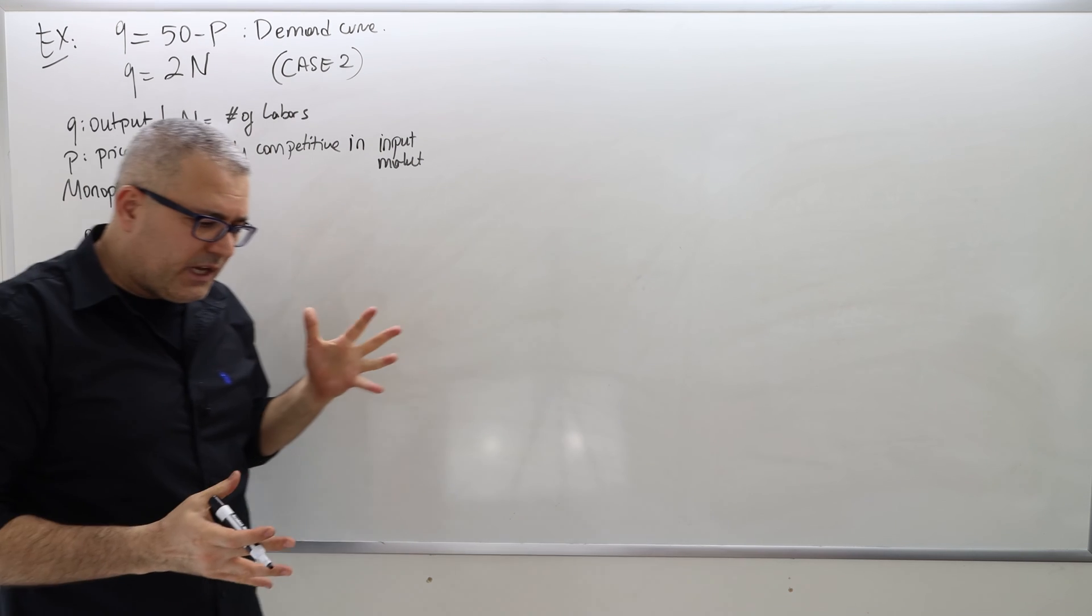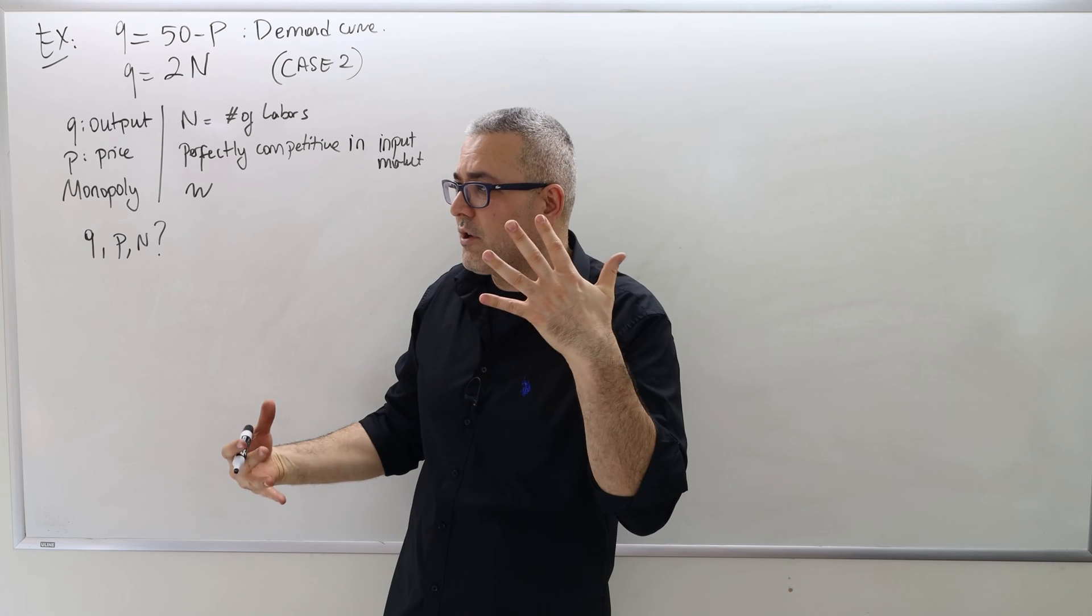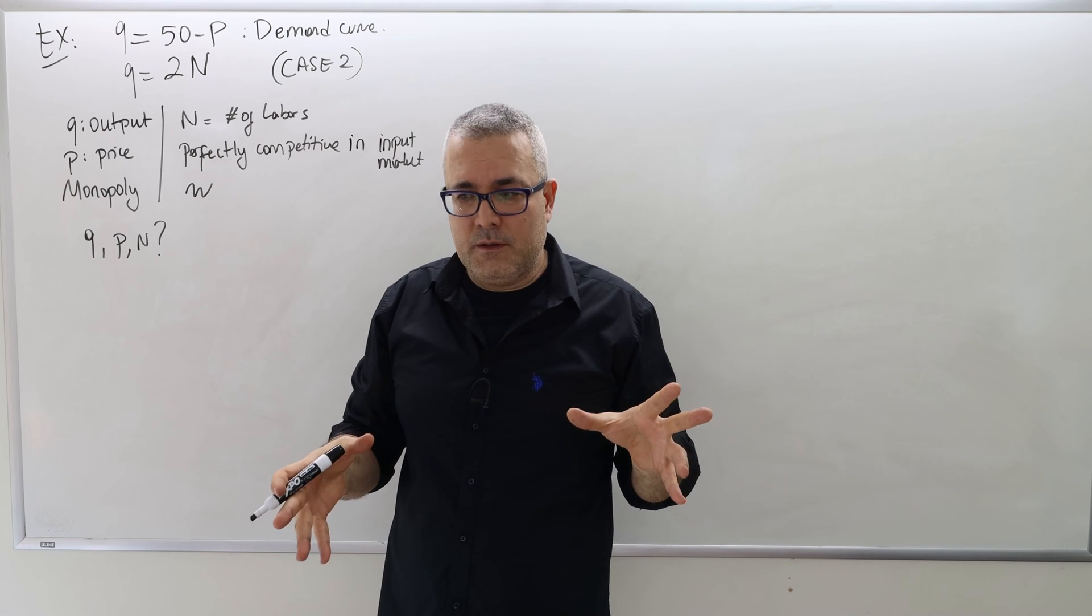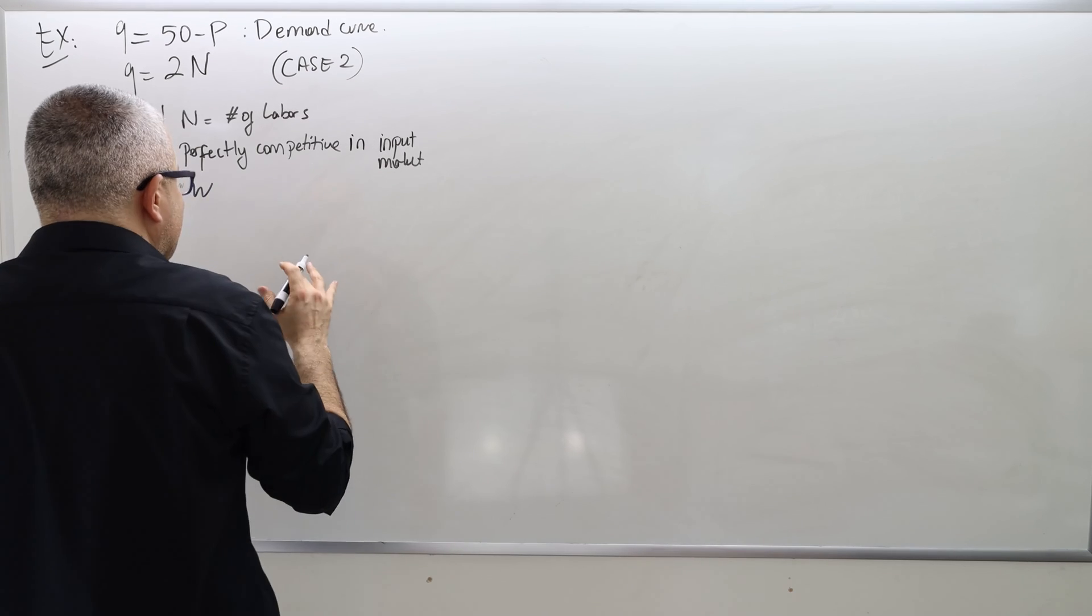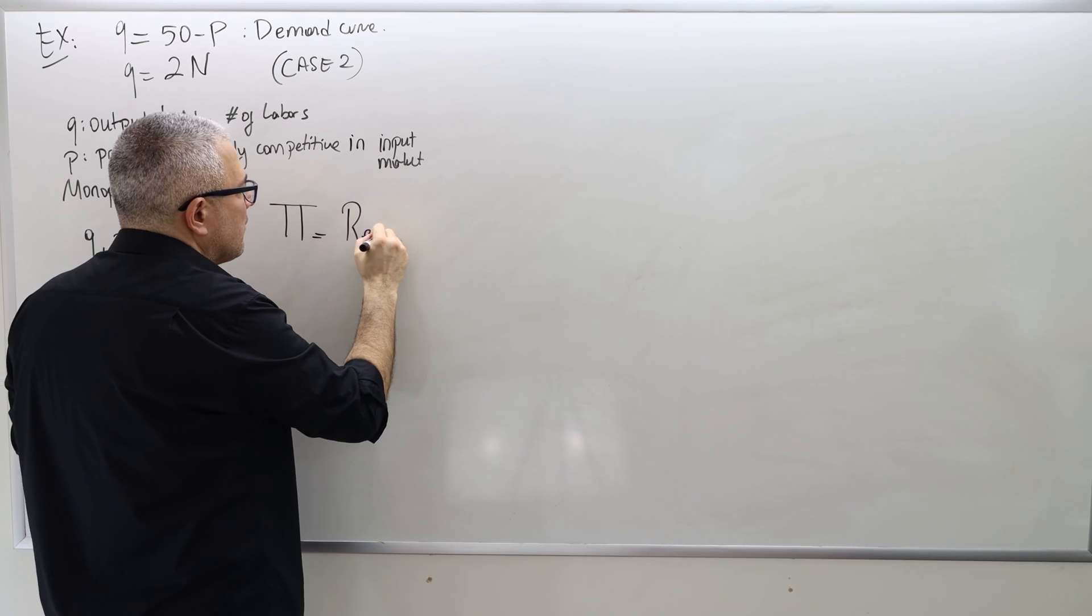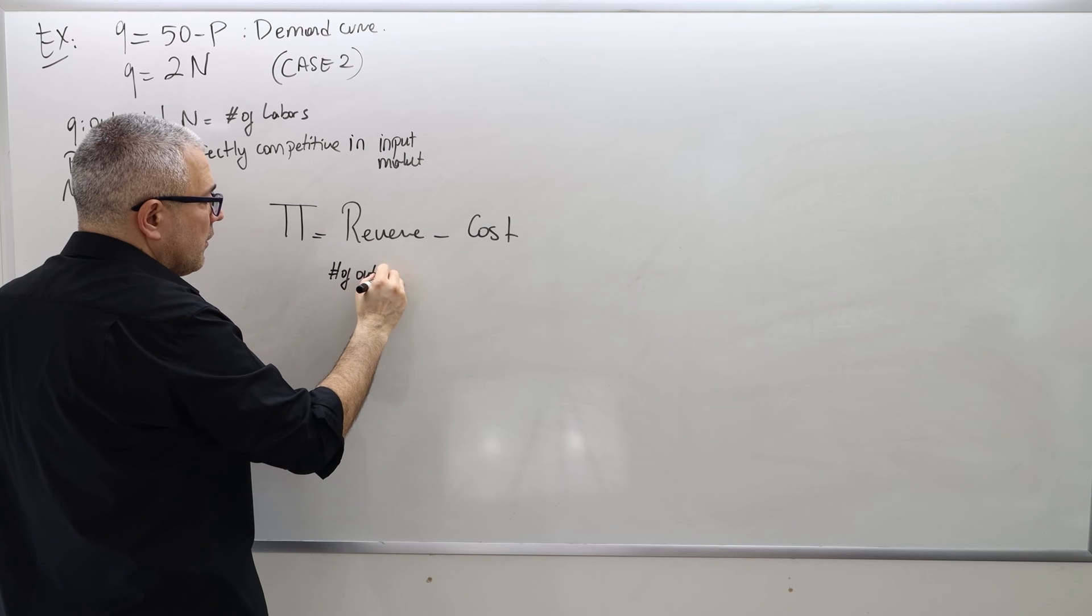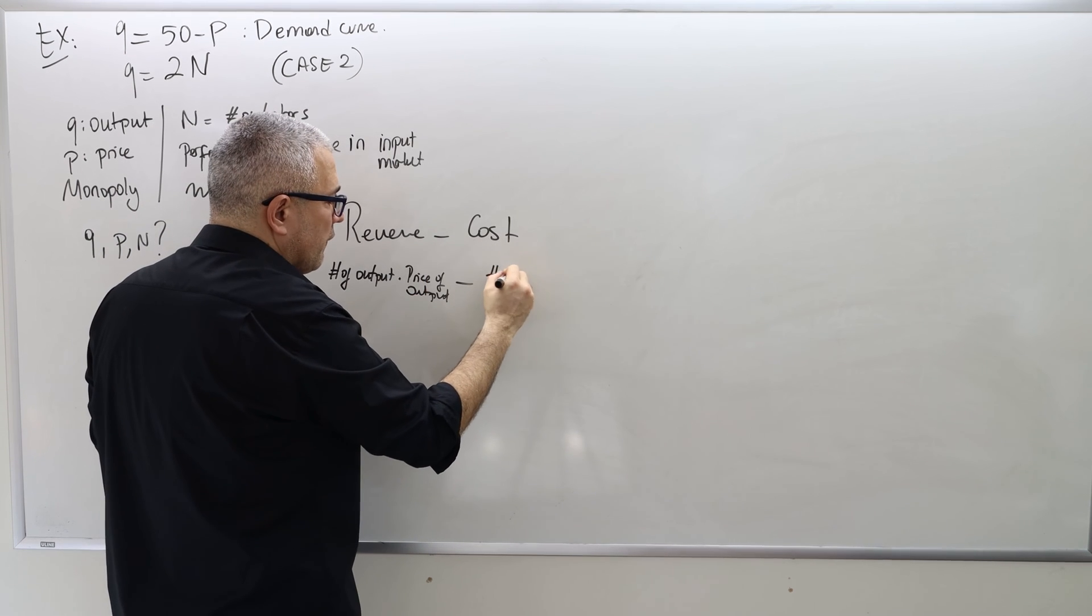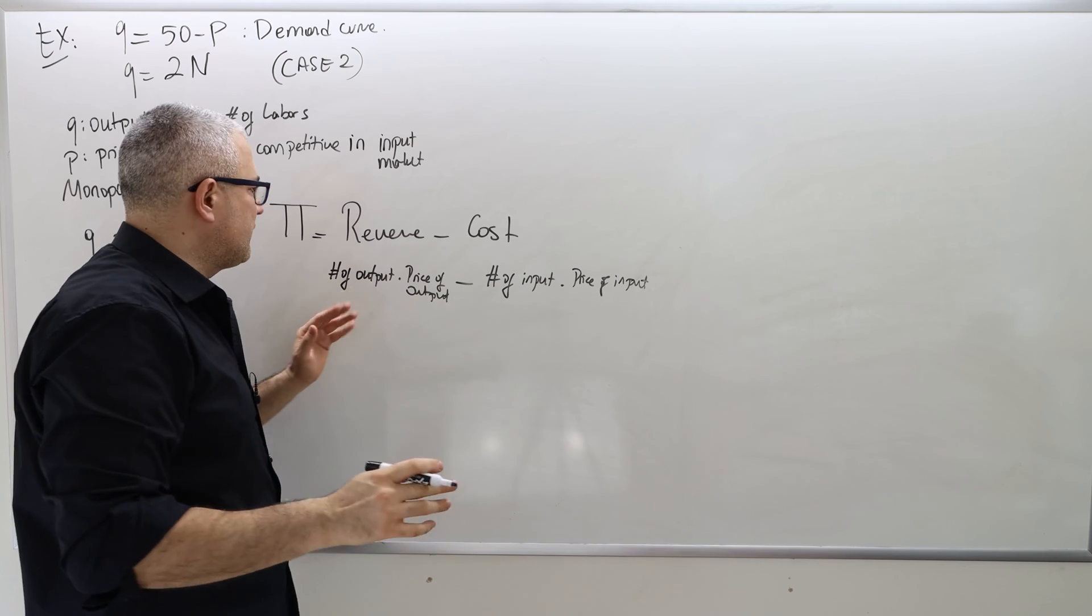So once again, because the notations are different, don't memorize things, because in a question like this, you have to translate all the formula into this new notation, which is going to be very confusing. So for that reason, just remember the profit function, and then solve it, optimize it. I think that's definitely an easy way to solve a question.